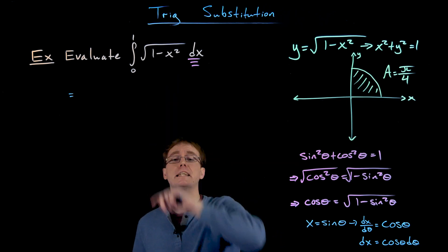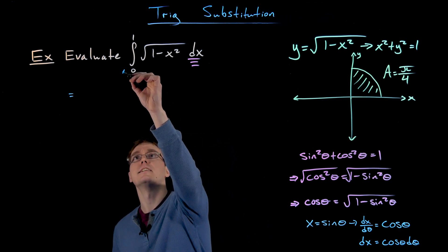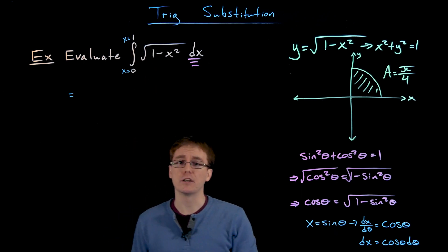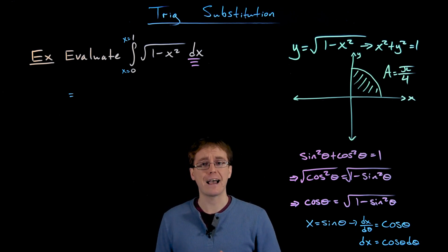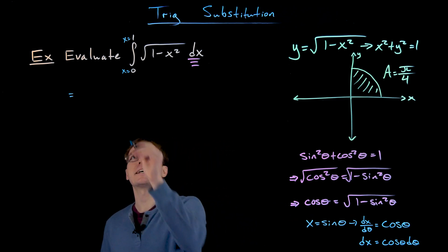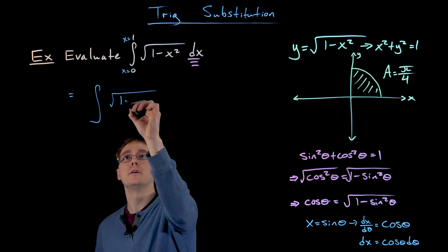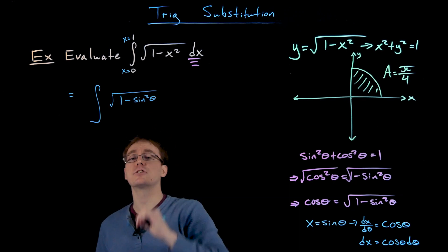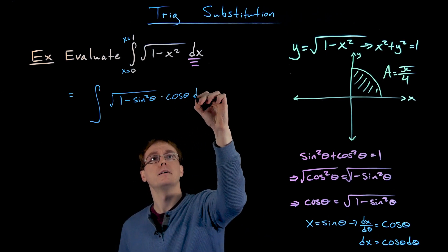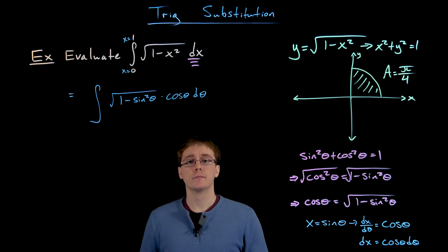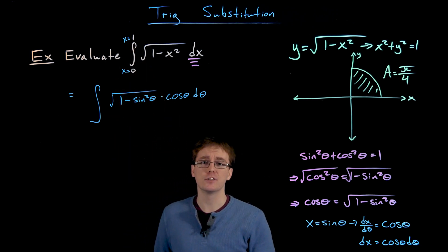Now we know how to take care of the integrand function, the square root of 1 minus x squared, as well as the differential of x. The last thing we have to worry about is the limits of integration — these are x values, but after the substitution we are rewriting our integral in terms of theta. So our limits of integration have to become the corresponding theta values. The square root of 1 minus x squared becomes the square root of 1 minus sine squared of theta, and dx becomes cosine of theta dθ.